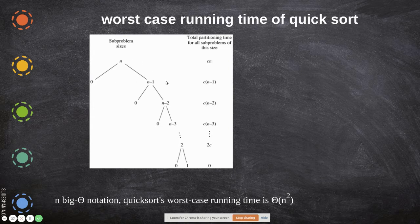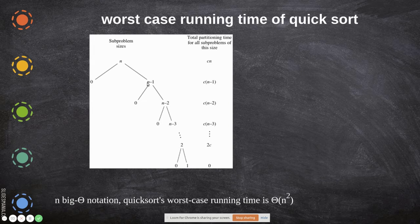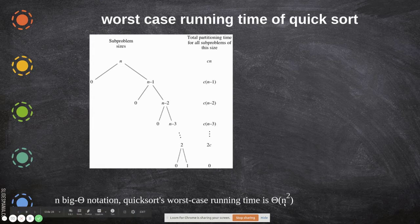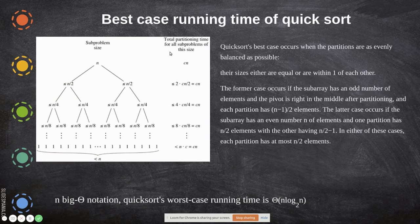Here n minus 1 again — since we have adopted one strategy, the same strategy will be adopted repeatedly. Again it will be only one element in one partition and all other elements in the other partition. If we take the total partitioning time for all subproblems, it is c·n + c·(n−1) + c·(n−2) and so on. In Big-O notation, the worst case in this case is O(n²).